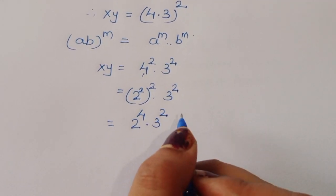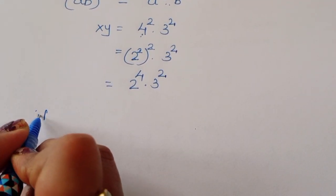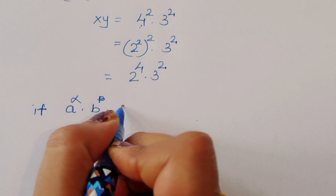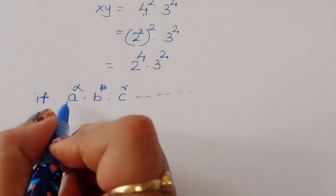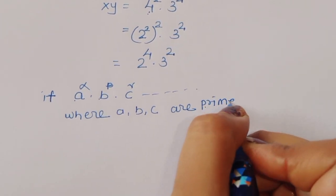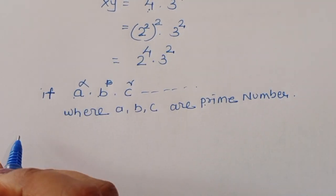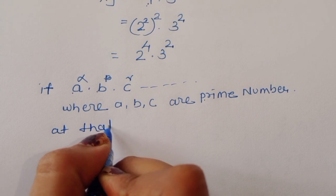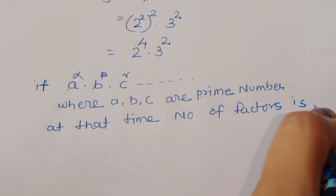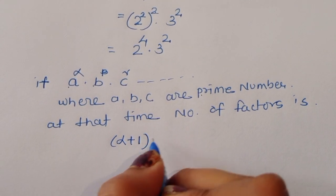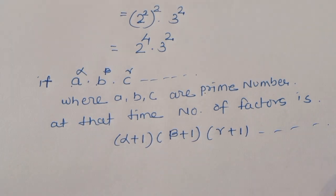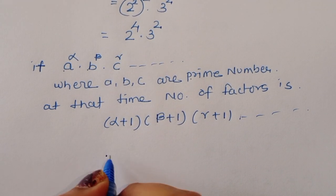Now we know the formula: if a number is expressed as a power alpha times b power beta times c power gamma and so on, where a, b, c are prime numbers, then the number of factors is given by (alpha plus 1) times (beta plus 1) times (gamma plus 1) and so on. Using this formula here, x times y is equal to 2 power 4 times 3 power 2.